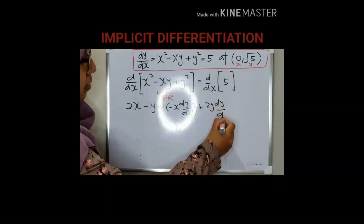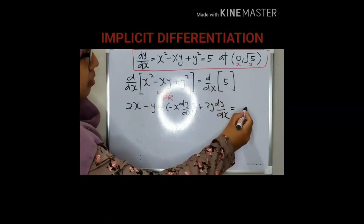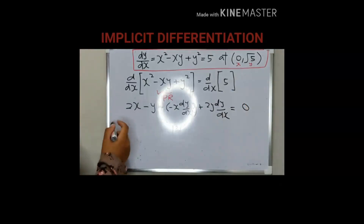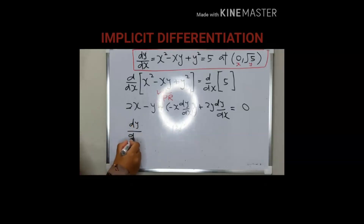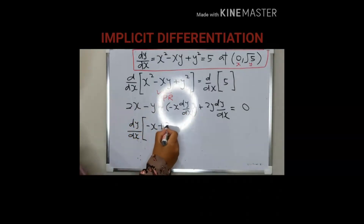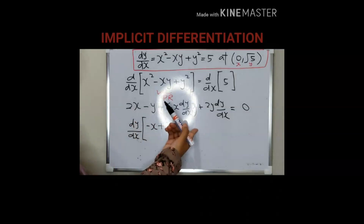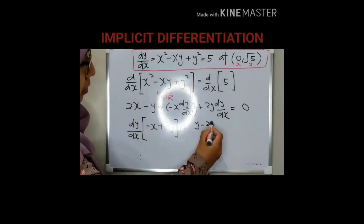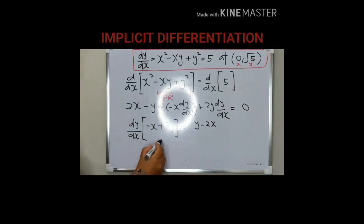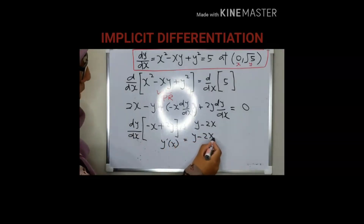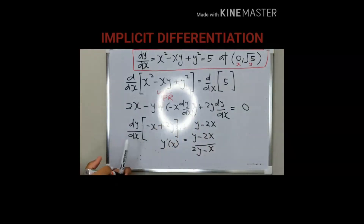Differentiating y squared gives 2y dy/dx, and differentiating the constant gives 0. Collect dy/dx on the left hand side: (negative x plus 2y) dy/dx, and bring the remaining terms to the right hand side: y minus 2x. Therefore, dy/dx equals (y minus 2x) over (2y minus x).